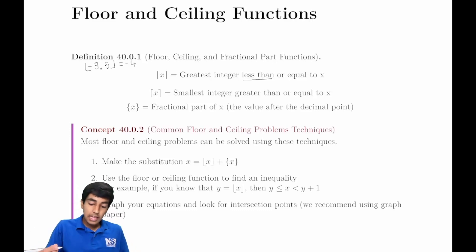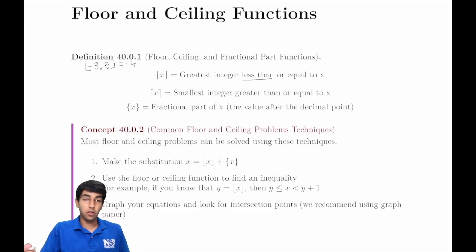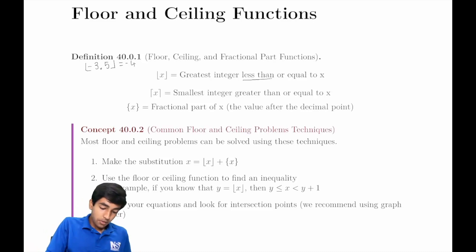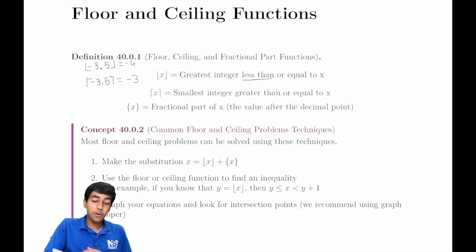The ceiling of a number is just the opposite — the smallest integer greater than or equal to it. Similarly, the ceiling of negative 3.5 is not negative 4, but negative 3.